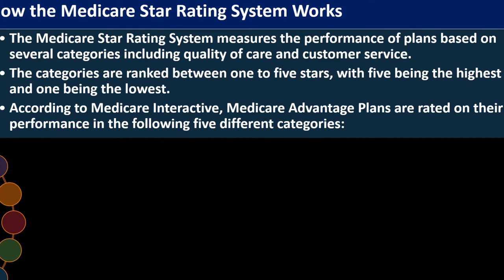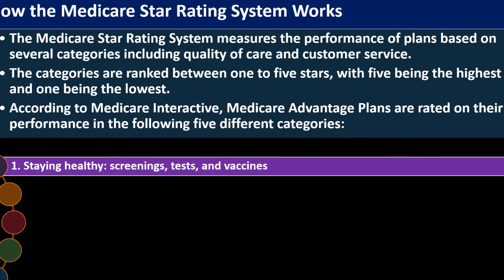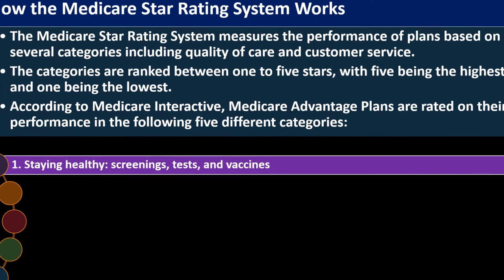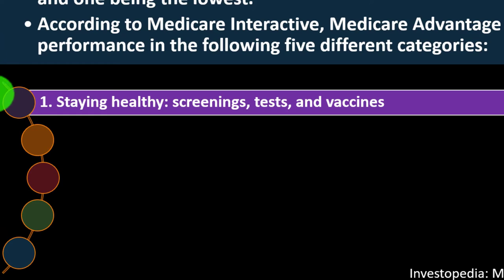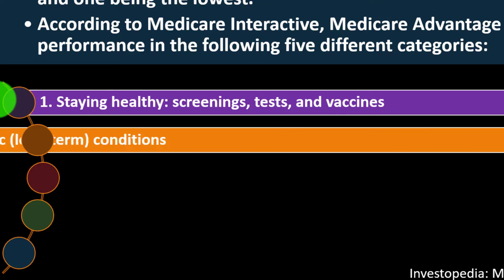According to Medicare Interactive, Medicare Advantage plans are rated on their performance in five different categories. Category number one is staying healthy: screenings, testing, and vaccines — essentially the more preventative type of care.